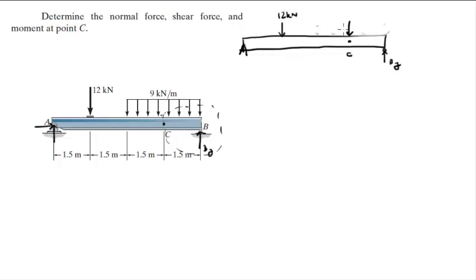Since it's a rectangular distributed load, it's the same as one single force acting at the center. Let's call this force Fy, and it equals 9 kilonewtons per meter times 3 meters, which is 27 kilonewtons.